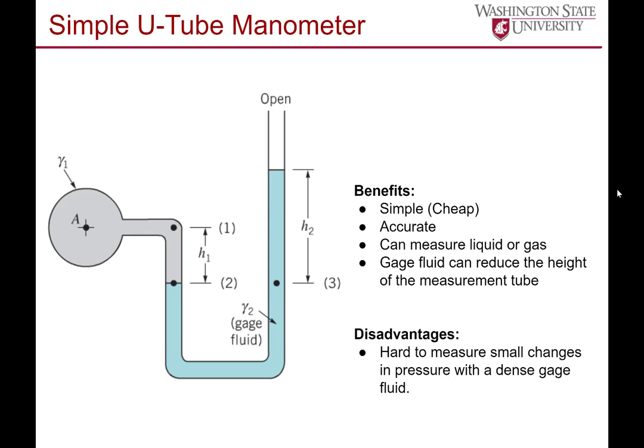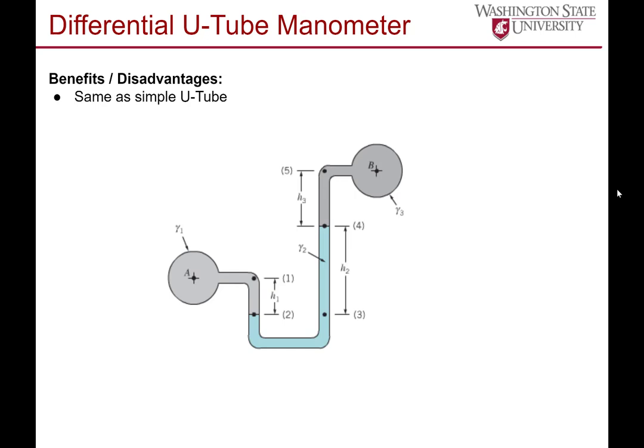In this case, you look at the pressure relationship at point A, which is gauge pressure from the open tube. From atmosphere or zero gauge pressure, we come down H2 so gamma H2 increases the pressure, then we come back up H1 decreasing the pressure, hence the negative sign. If we're measuring pressure difference between points A and B, imagine you have two different tubes and we're looking at the pressure differential. Following from pressure at B, we go down H3 increasing pressure.